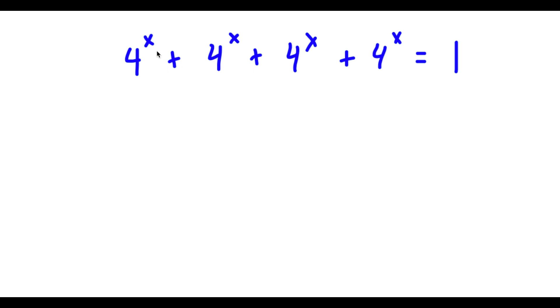Alright, so I have 4 to the power of x plus 4 to the power of x plus 4 to the power of x plus 4 to the power of x is equal to 1. The first thing I'm going to do is factor out 4 to the power of x from the left hand side.